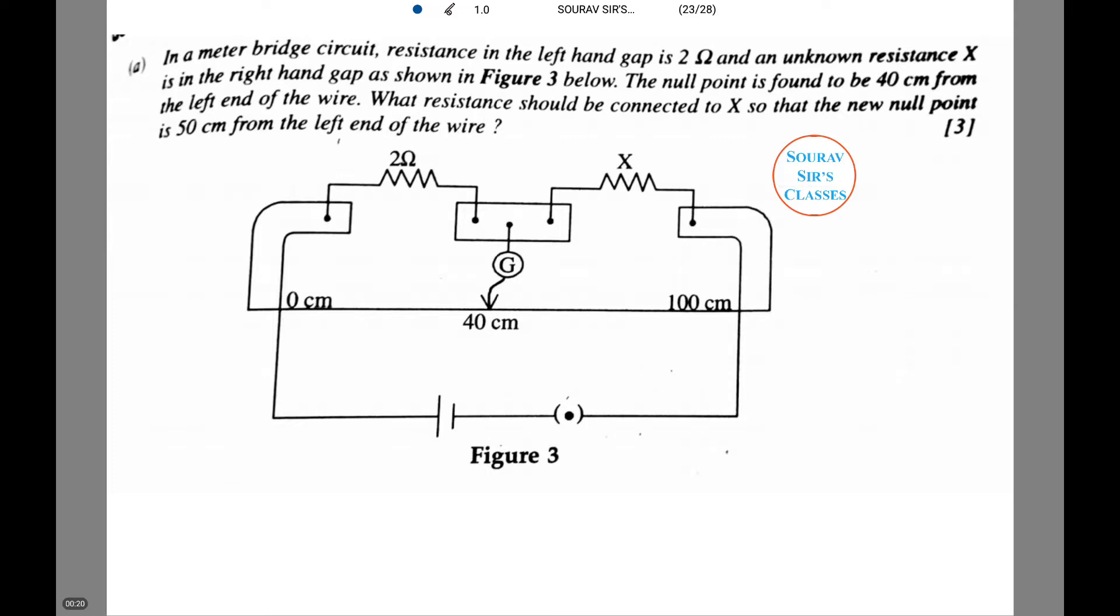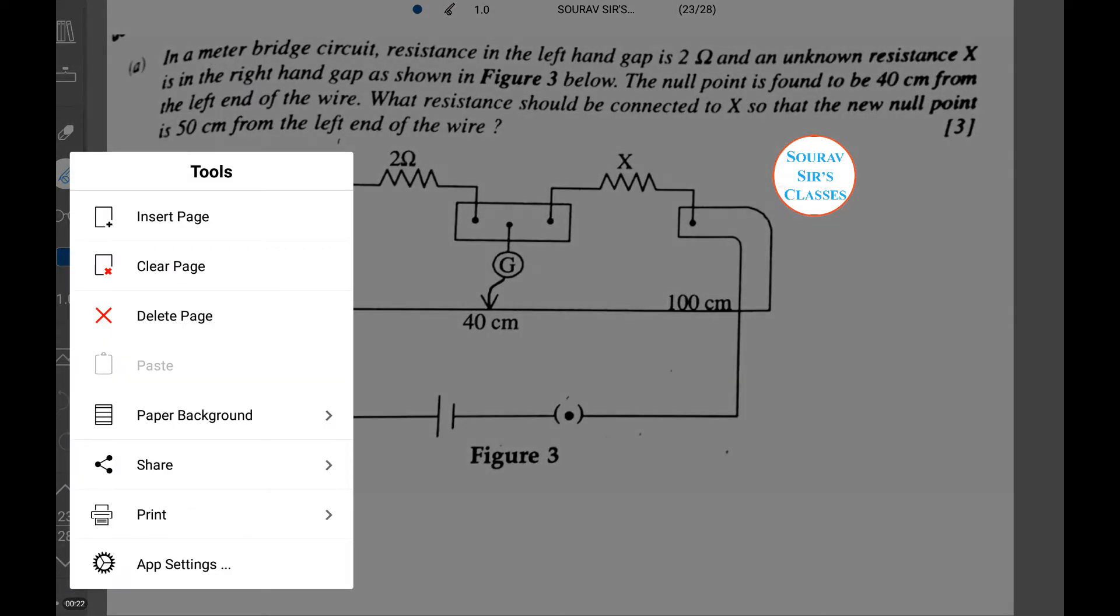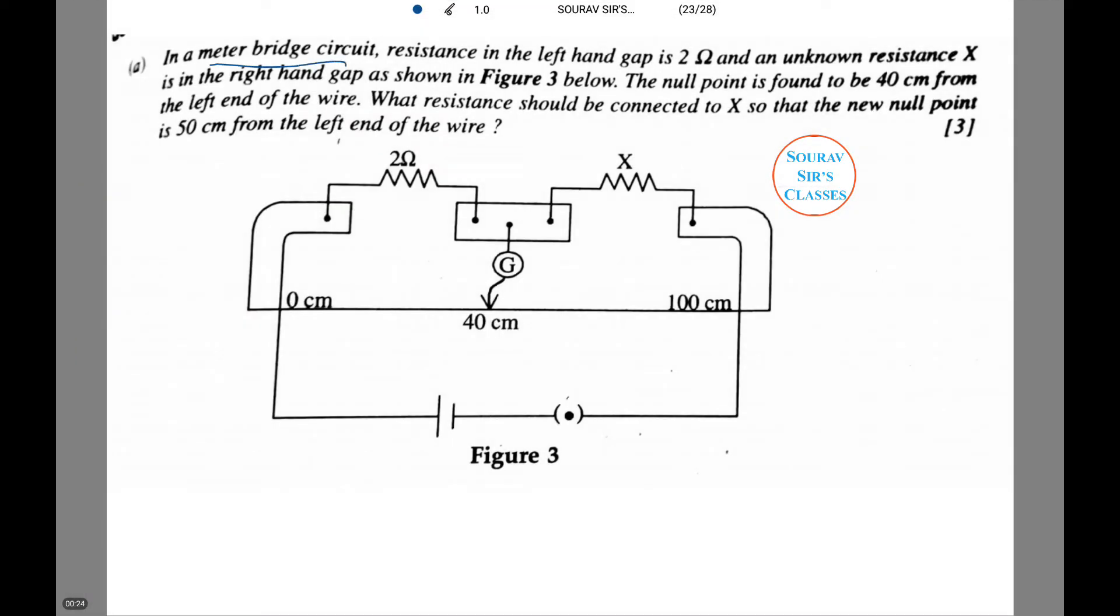In our first question we are given a meter bridge circuit with resistance on the left hand gap as 2 ohms and an unknown resistance X is in the right hand gap as shown in the figure given below. The null point is to be found 40 cm from the left end of the wire. What resistance should be connected to X so that the new null point is 50 cm from left end of the wire?